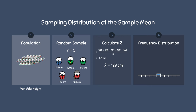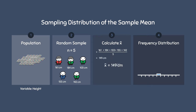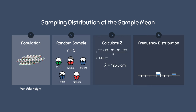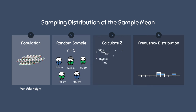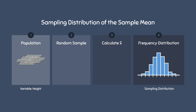Remember that a sampling distribution involves taking multiple samples, so we would have to do this entire process for another sample. Therefore, we would take another simple random sample, calculate x-bar, and then plot that value onto the histogram. Take another random sample, calculate x-bar, and then plot that onto the histogram. If we repeatedly do this hundreds and thousands of times, we eventually end up with a sampling distribution. Essentially, a sampling distribution is just a whole bunch of x-bars that are stacked on top of each other.